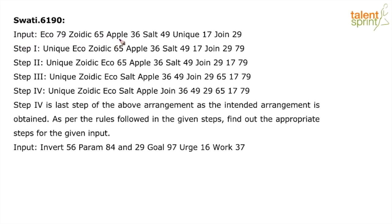The input is: echo 79, zoidec 65, apple 36, salt 49, unique 17, joint 29 — a combination of words and numbers. Some unique words are present; 'zoidec' is one unique word I'll check the meaning of after the session. There are four steps, and step four is the last step of the arrangement. Following the given rules, we need to find the appropriate steps for a new input: invert 56, param 84, and 29, goal 97, urge 16, work 37.